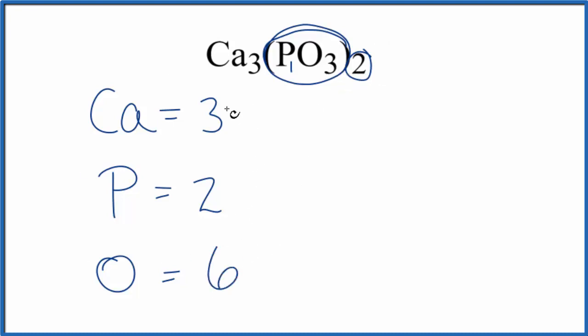So if we add this all up, three plus two plus six, 11 total atoms for Ca3(PO3)2, calcium phosphite.